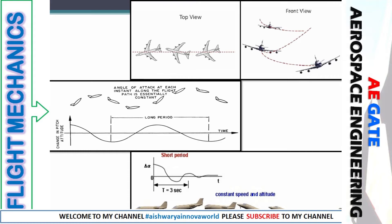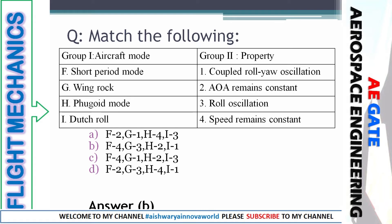For the short period mode, speed and altitude remain constant — the aircraft moves at constant speed and maintains altitude. So recalling that: Dutch roll matches with coupled roll-yaw oscillation (group I maps to B or D); phugoid has constant angle of attack (matches H2). The two are already matched, and our right option is option B.